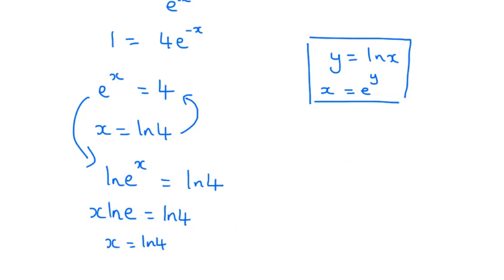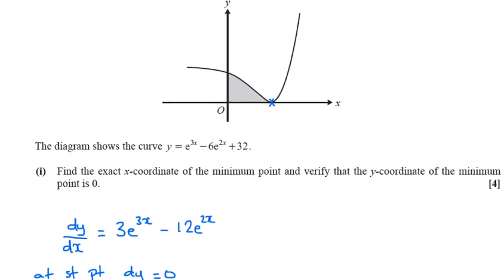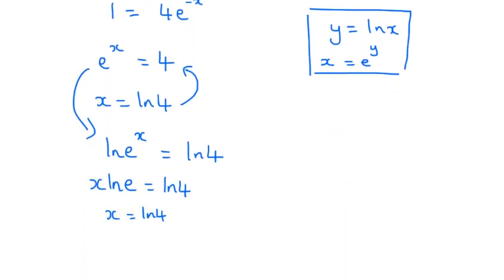So x is the natural log of 4. And it also says to verify that at that minimum point, the y coordinate is 0. So what we now need to do is substitute the x value into this equation here and show that we get 0 out.